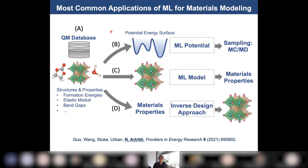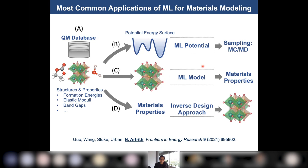This diagram shows the three most common applications of machine learning for materials modeling. Block A is a quantum mechanics database — first principles or DFT — containing atomic structures and properties such as formation energies, elastic moduli, band gaps, or spectroscopy data. One type of ML model can describe an accurate potential energy surface, which can then be used in Monte Carlo or MD simulations. Another type uses a database of material properties to predict new properties, or in the inverse design approach, to predict atomic structures from desired properties.